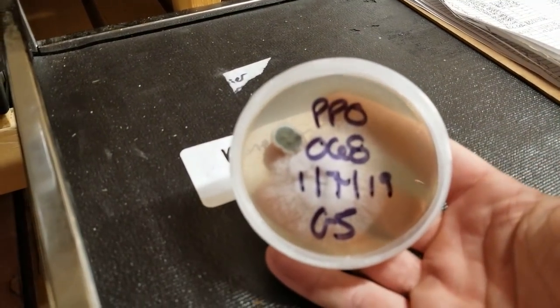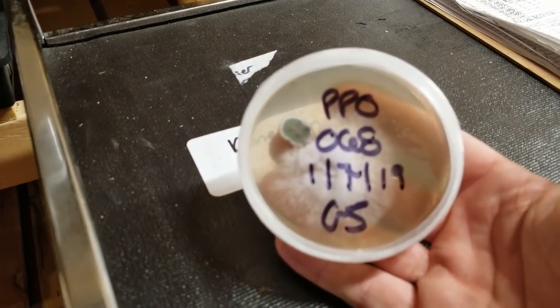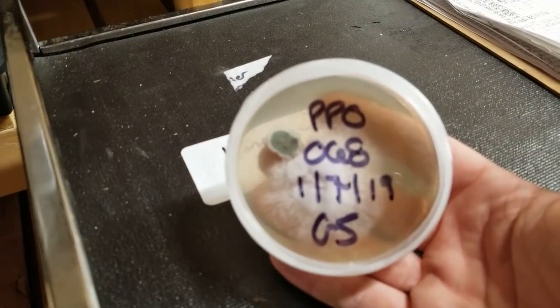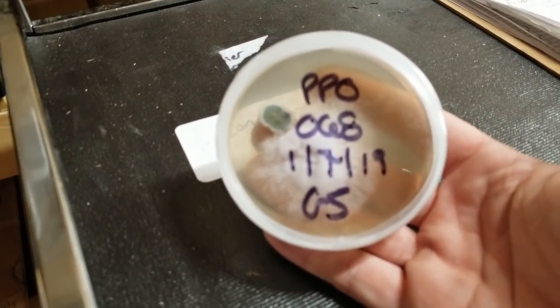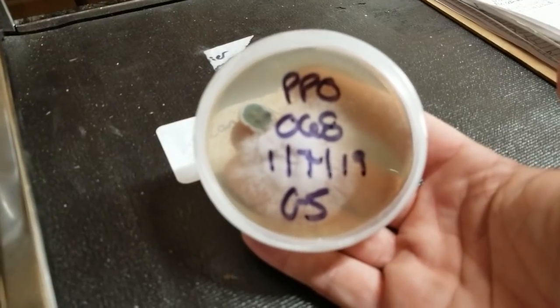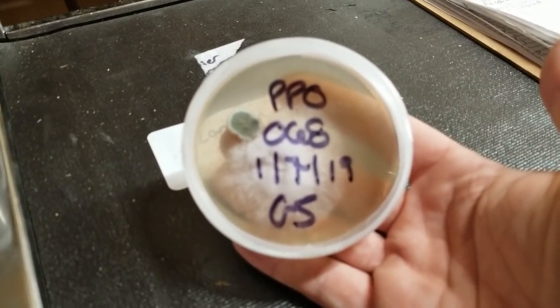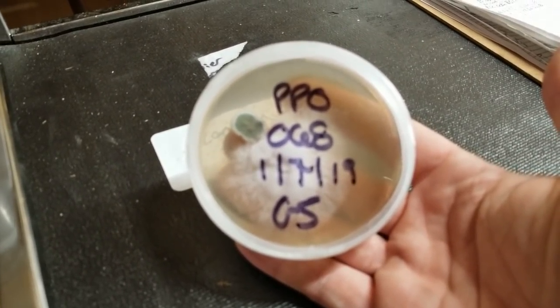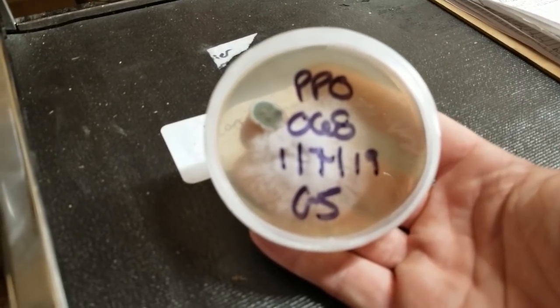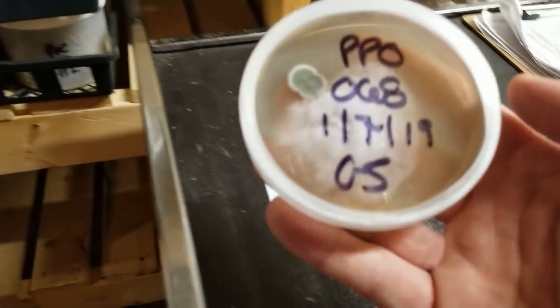The masters mix is 50% soy hull sawdust combo. I want to revisit this strain. This is a beautiful pearl white oyster strain that didn't really cluster, so we were getting single mushrooms growing. I'm curious now that I have more knowledge in cultivation, if we use a higher-yielding substrate, can we get this mushroom to cluster? Because it does cluster in nature.